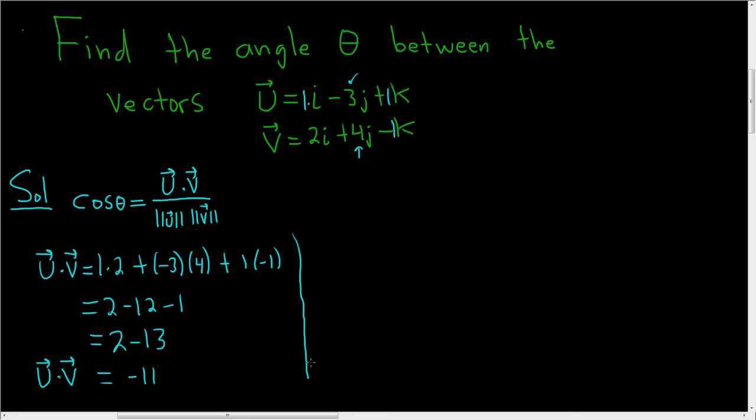Now let's go ahead and find the magnitude of u. All you do is you take the square root, and you square each of the components, and you add them all up. So it'll be 1 squared plus negative 3 squared plus 1 squared. So this is equal to the square root of 1 squared is 1, negative 3 squared is 9, and then 1 squared is 1. So we end up with the square root of 11.